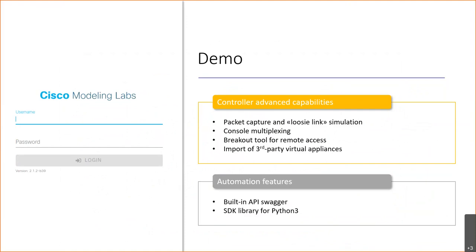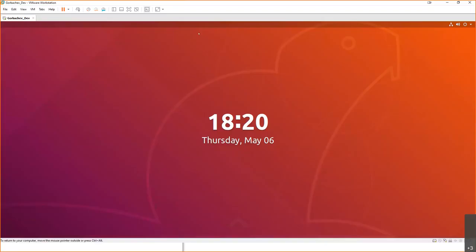With that, we are ready for the demo. We'll take a look at some advanced capabilities: packet captures, simulation of losing links between devices, how console multiplexing works inside CML, remote access capabilities using the breakout tool, how to import a third-party virtual appliance, the CML API, and the Python SDK library to see how easily we can automate an infrastructure modeling process.